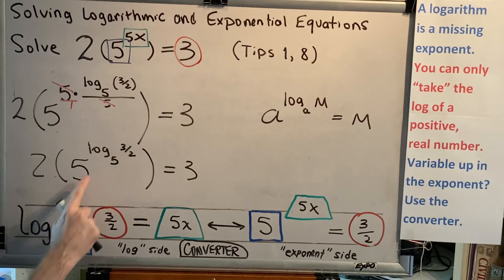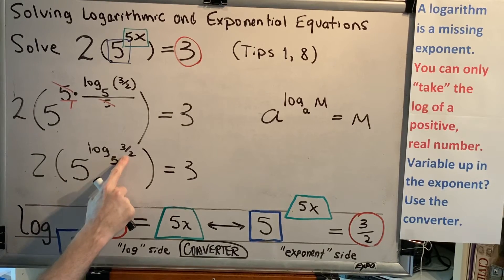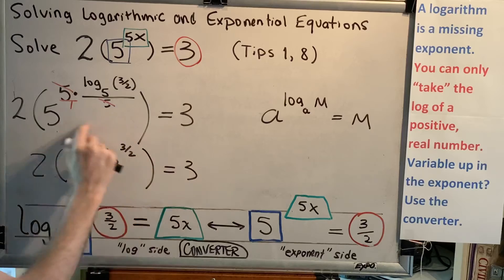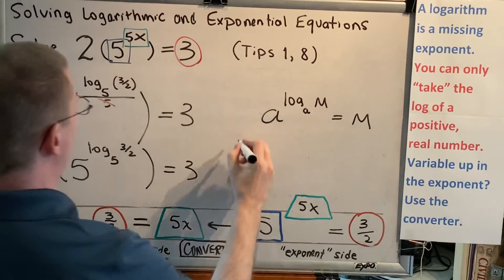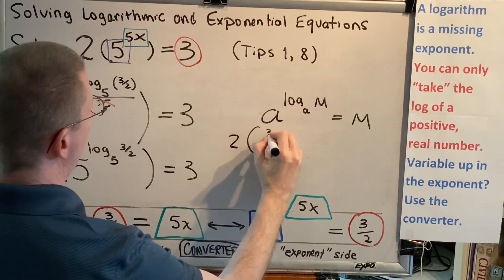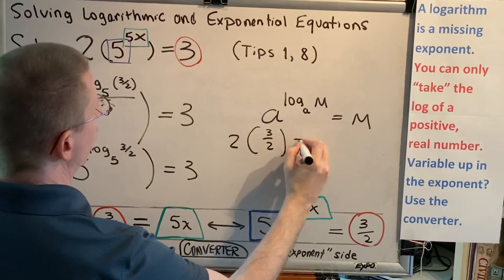a raised to the log base a of m equals m. So everything in the parentheses here is just going to equal m, which is 3 halves. So we get 2 times 3 halves equals 3.